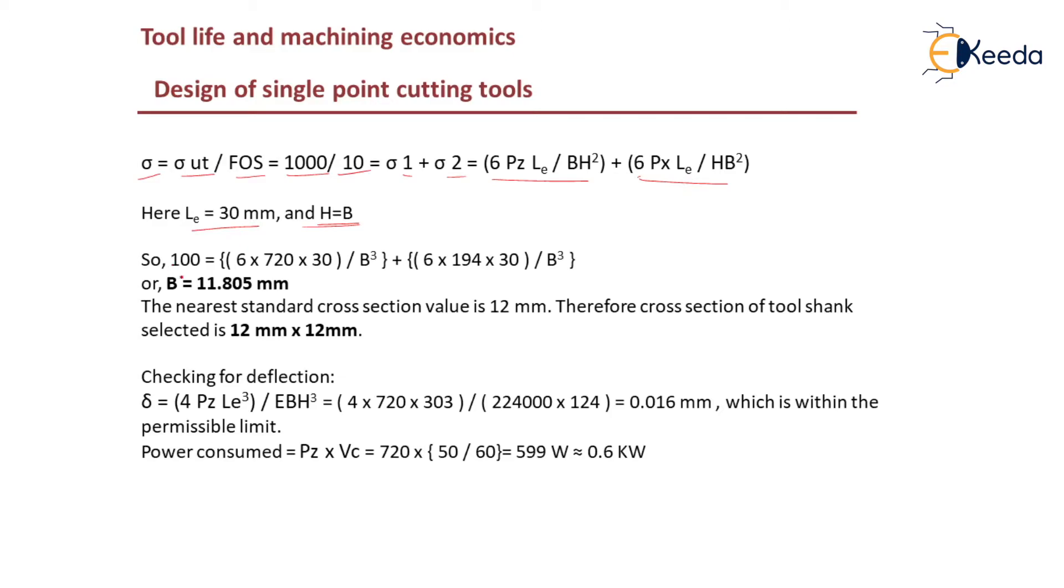As it is a square cross section, b will be equal to h. Le is given as 30 mm. So if you substitute, this is 1000 by 10 which is 100. You can substitute sigma is 100 which equals sigma 1 plus sigma 2.